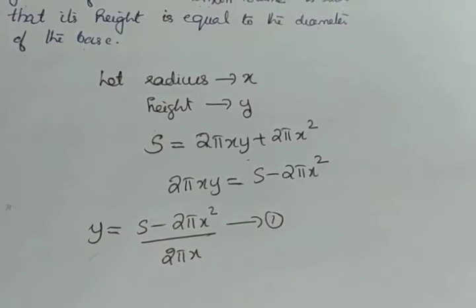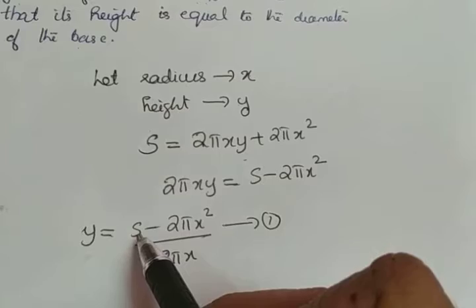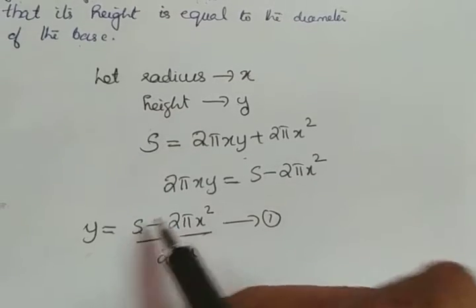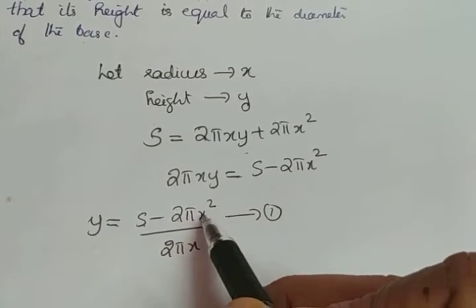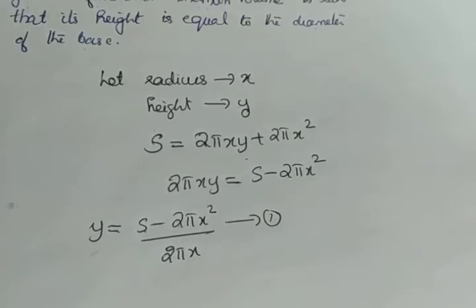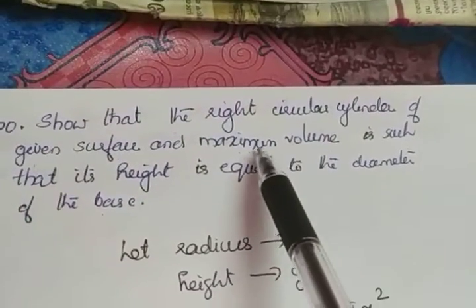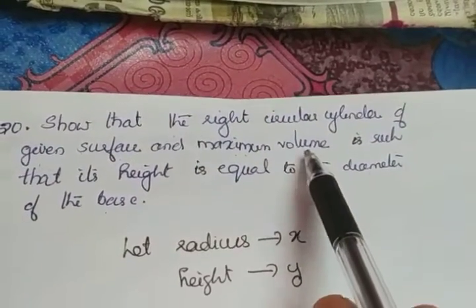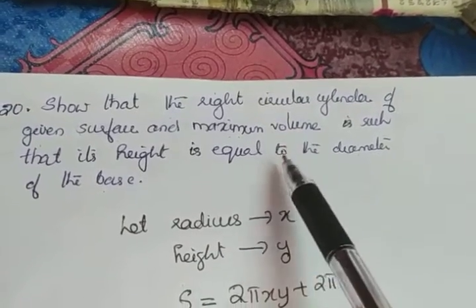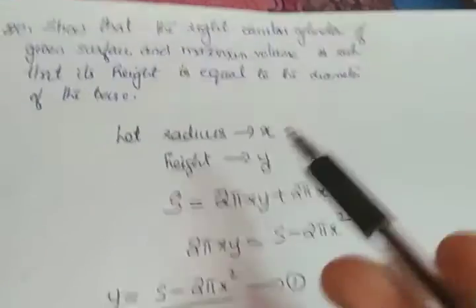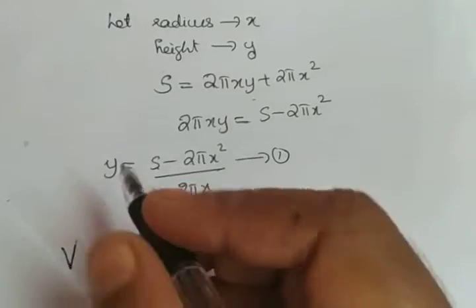Here s is a constant because the surface area is given as constant; 2 and π are also constants, so the only variable is x. We have to show that when volume is maximum, height equals the diameter. So we will maximize the volume.